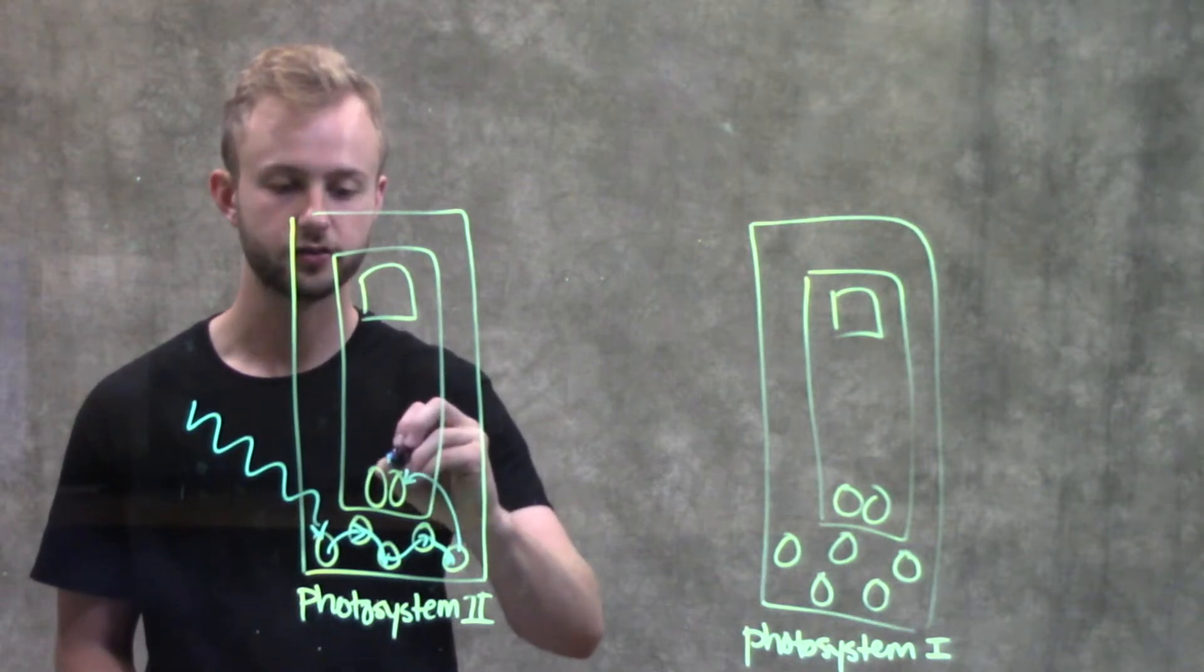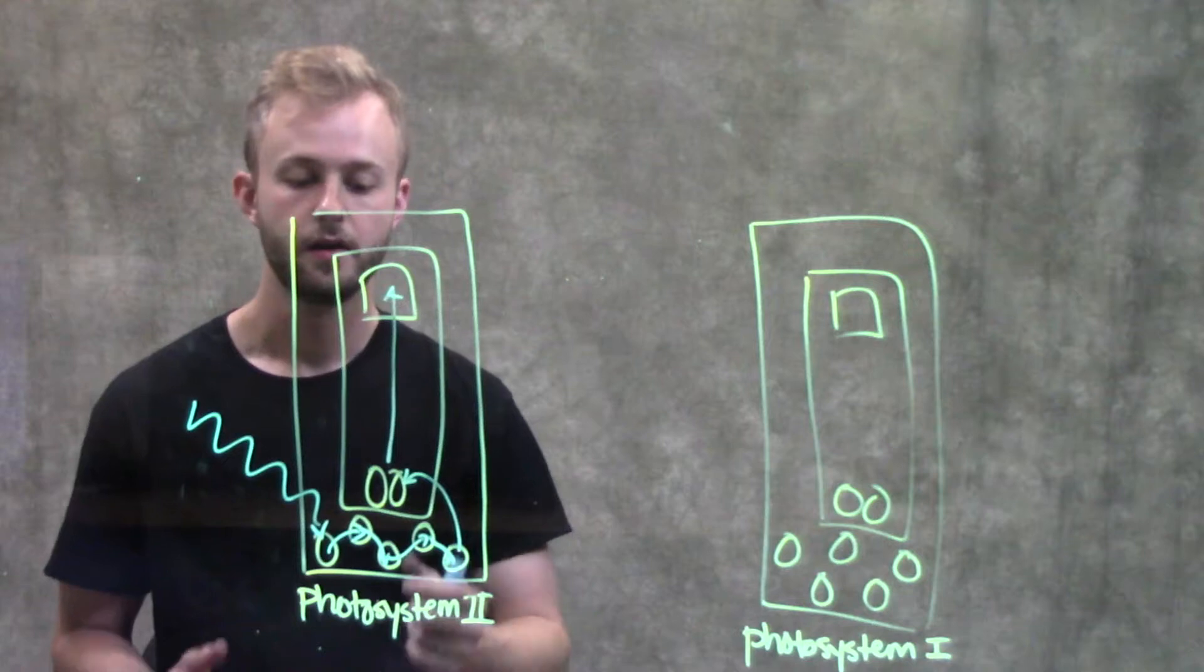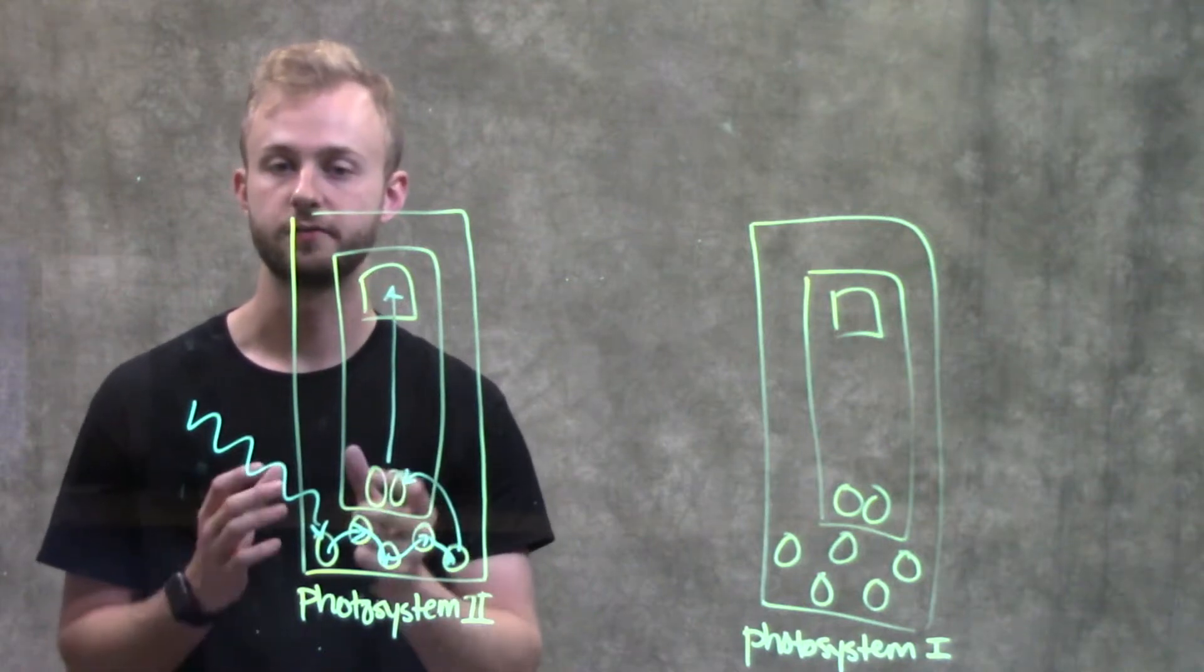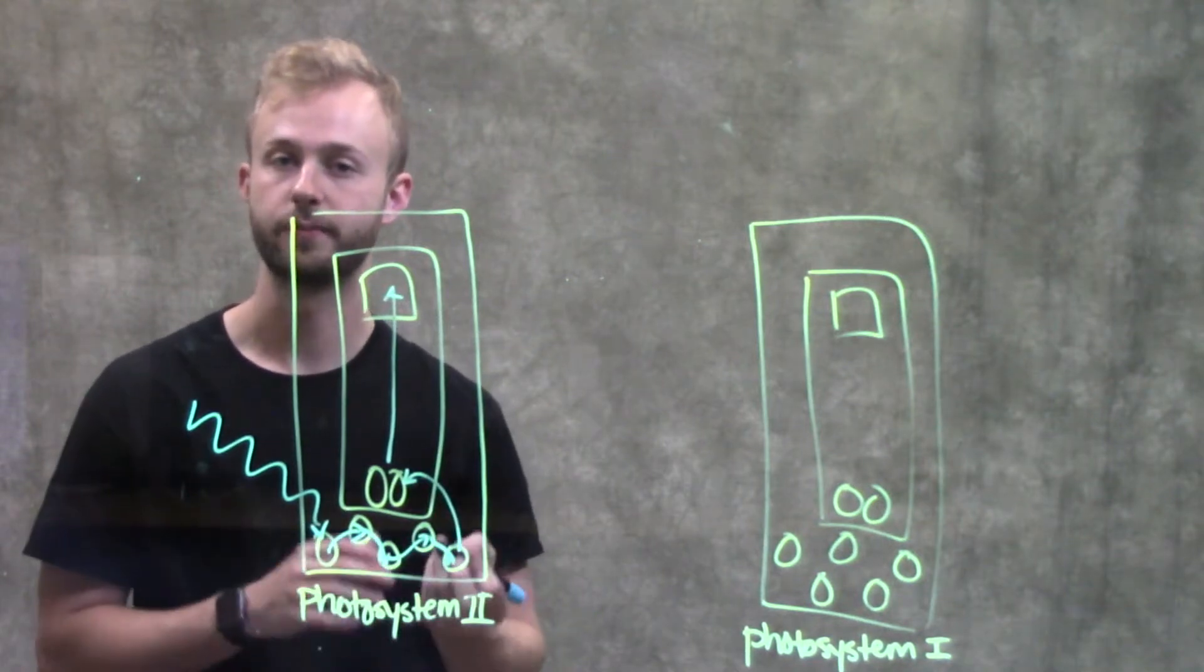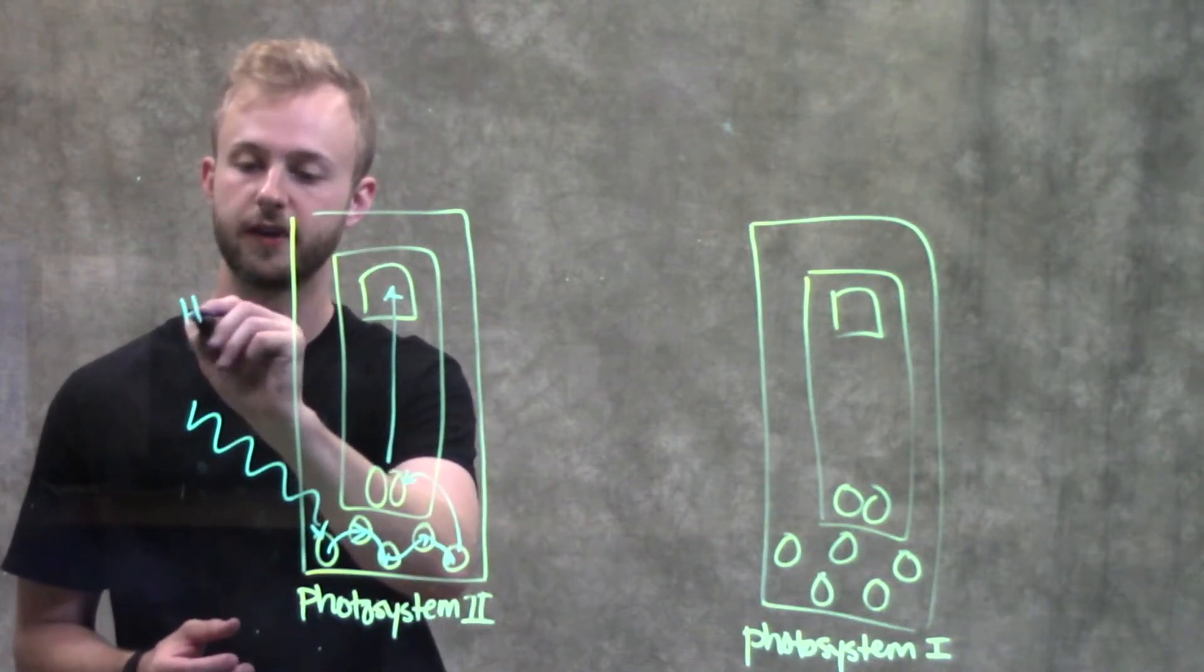When that happens, one of their electrons gets excited and picked up by the primary electron acceptor. Now we have a hole on these P680 molecules that needs to be filled by an electron. Those electrons come from the splitting of water.